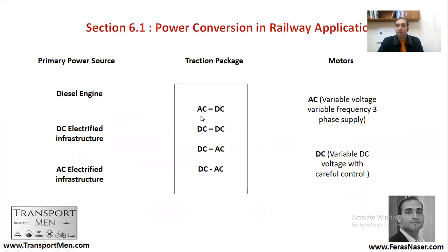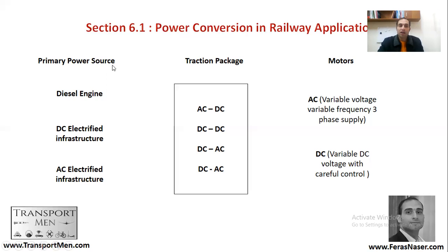To achieve this, you need traction packages. Those traction packages will convert AC to DC, DC to DC, DC to AC, or AC to AC — because you need a conversion of high voltage to lower voltage AC. This is how power is moved from your primary source to your motors through the traction package.